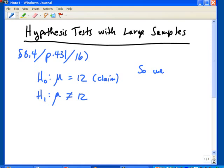So, in this case, we use a two-tail test with a 1% level of significance, and we're given that information.